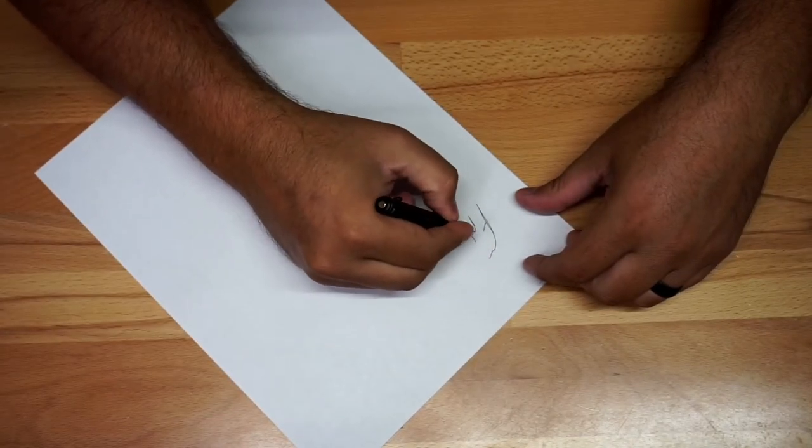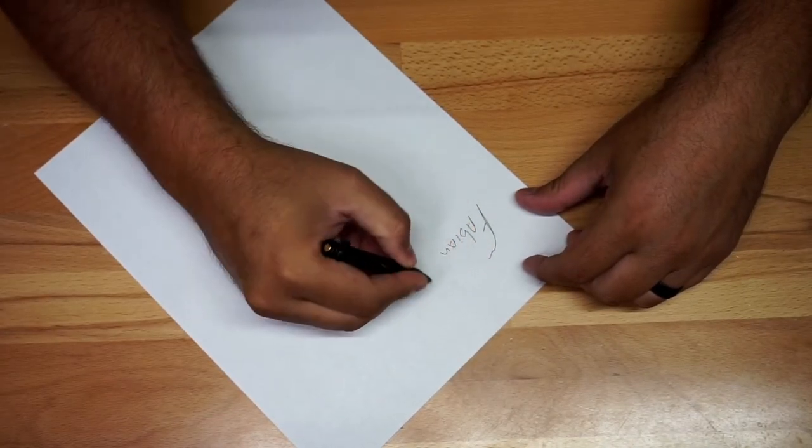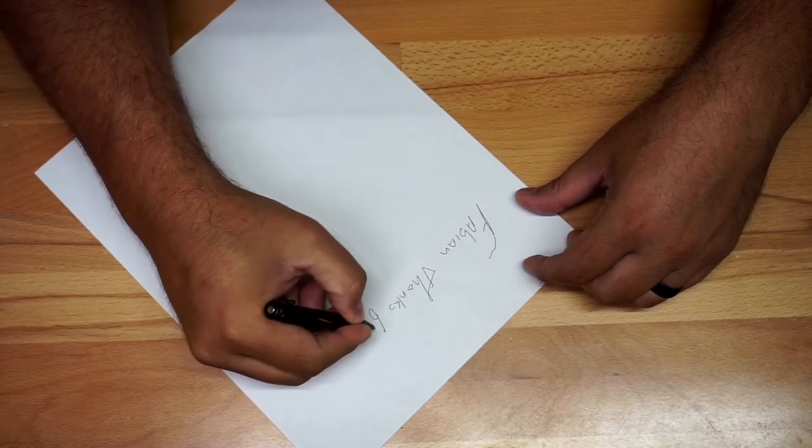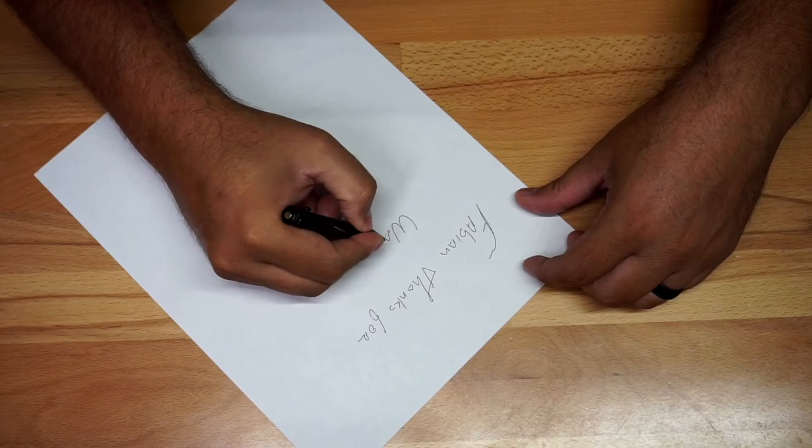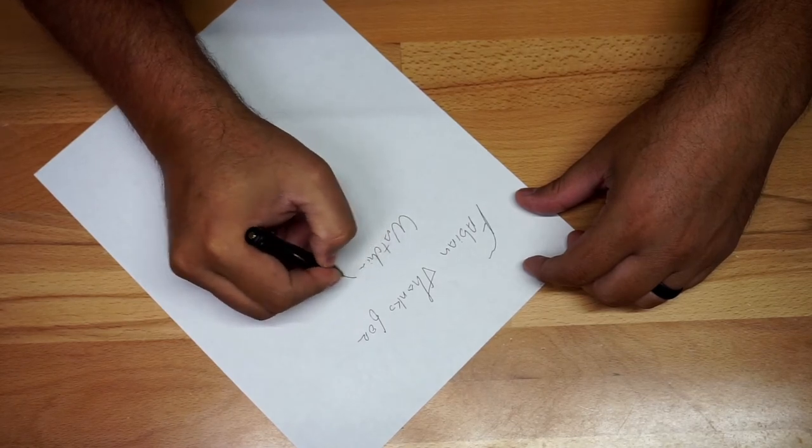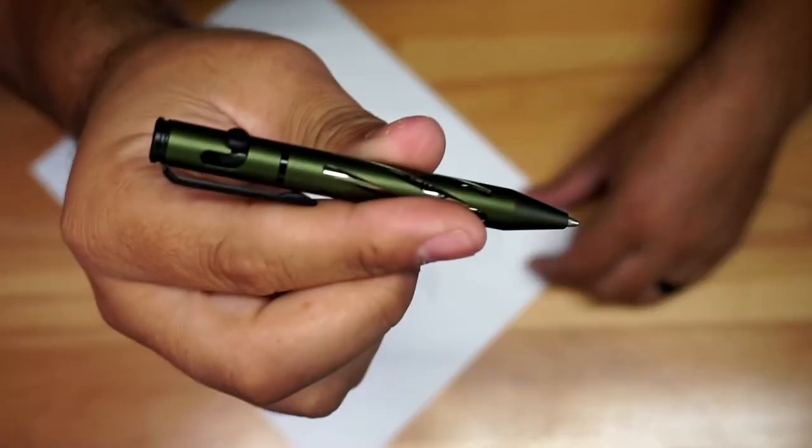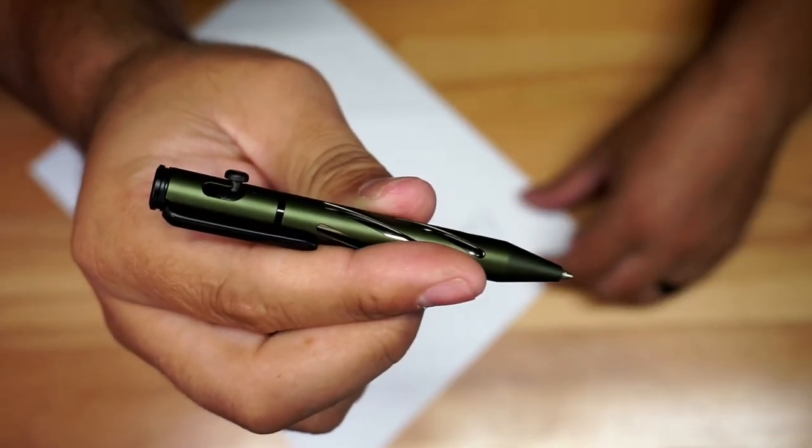I'm going to write my name here just so you can see it. Fabian. And then I'm just going to say Thanks for Watching. You can see that right there. It writes just fine. So again, little pen from Olight. If you're looking for something like this, this is definitely pretty cool.